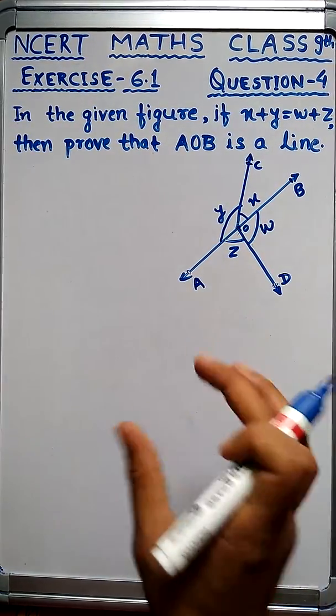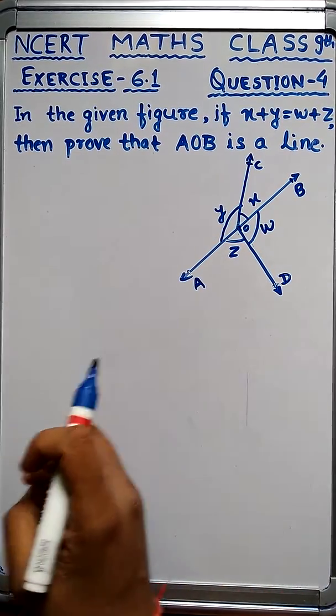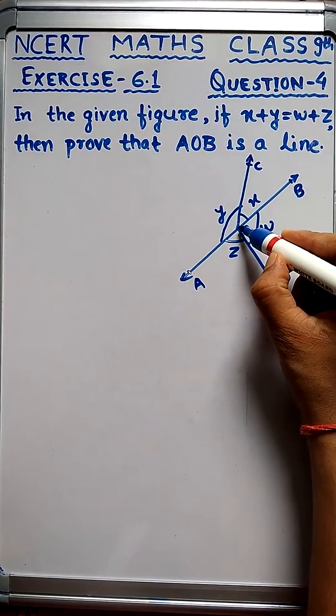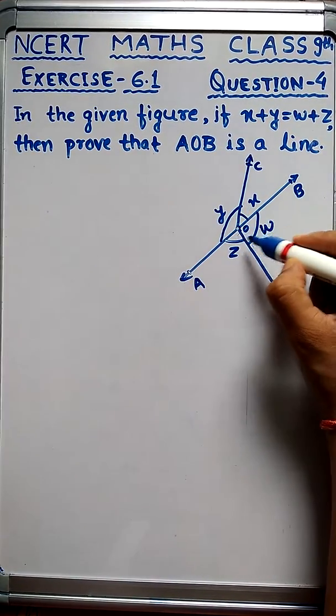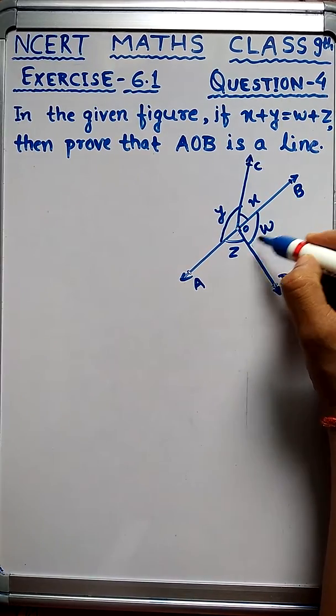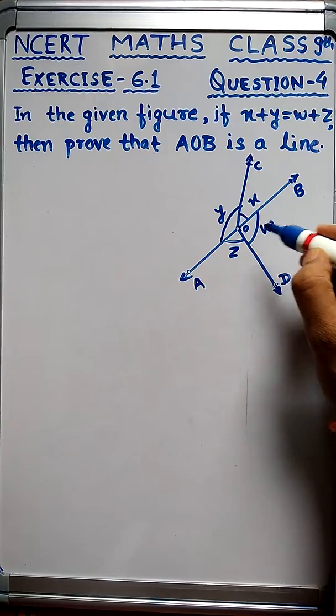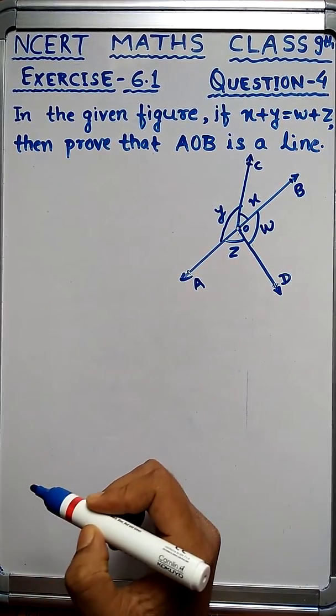Now we are going to solve the question. What do we need to do? We are given this point O with angles x, y, w, and z. We can say that at point O, the sum of these 4 angles is 360 degrees.